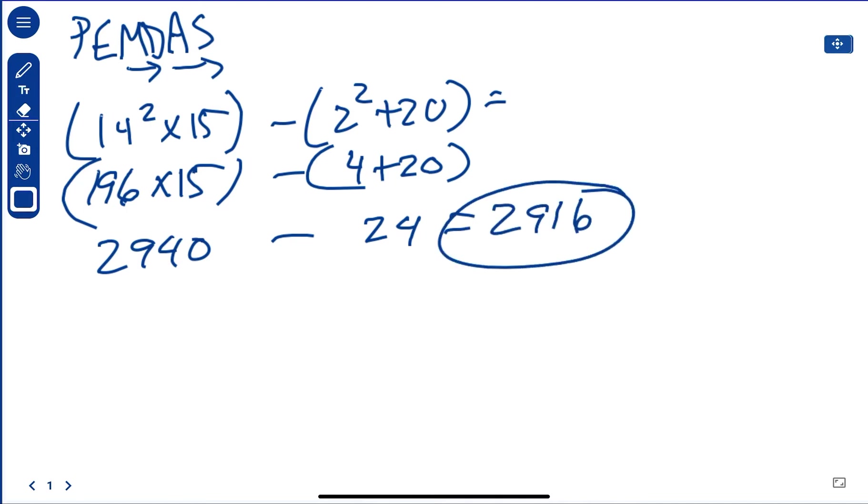Okay, we did parentheses, and while we were in the parentheses, we did the exponent first here, and we did it first over here. And then we added it on, or multiplied and added over here, and come up with both of these.